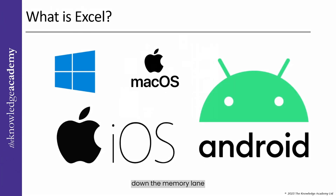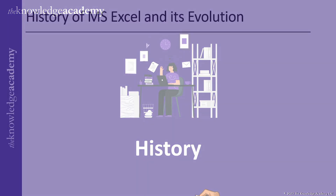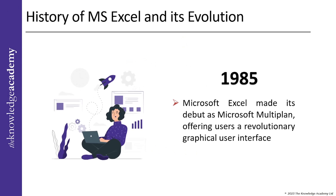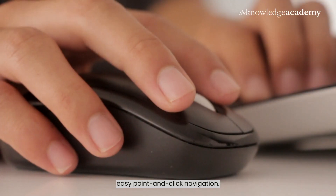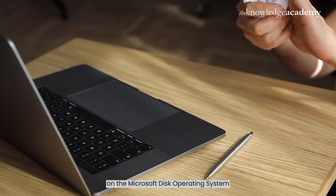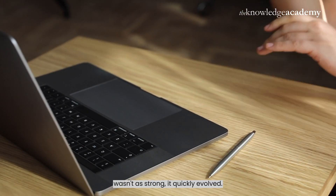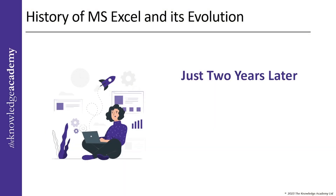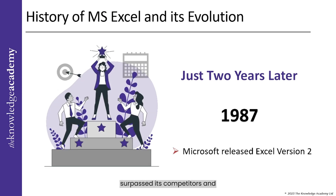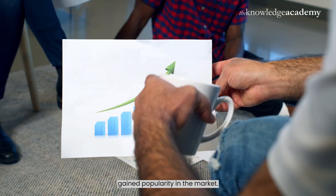Let's take a trip down memory lane and explore the history of MS Excel. In 1985, Microsoft Excel made its debut as Microsoft Multiplan, offering users a revolutionary graphical user interface that allowed for easy point-and-click navigation. While its initial reception on the Microsoft Disk Operating System wasn't as strong, it quickly evolved. Just two years later, in 1987, Microsoft released Excel version 2, which surpassed its competitors' features and gained popularity in the market.